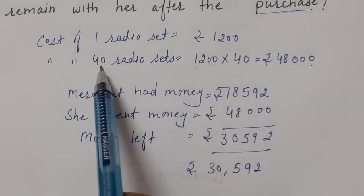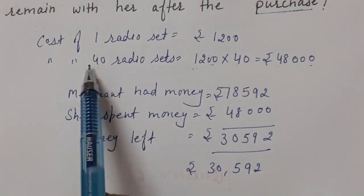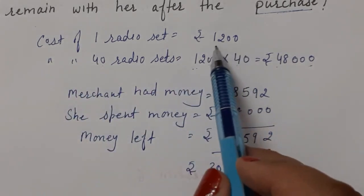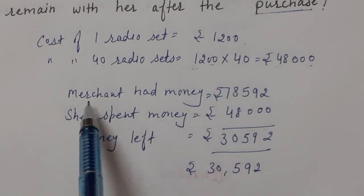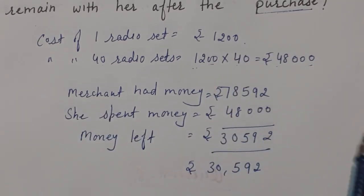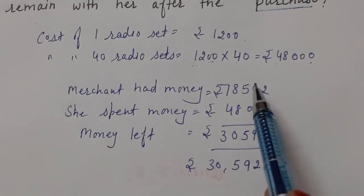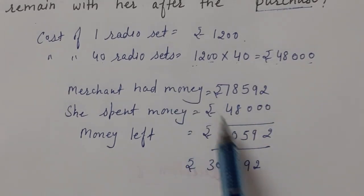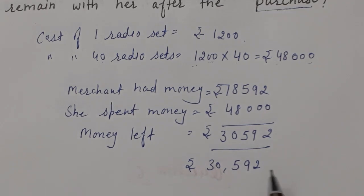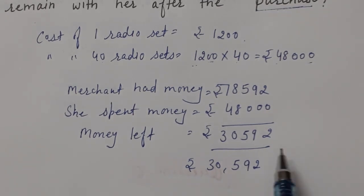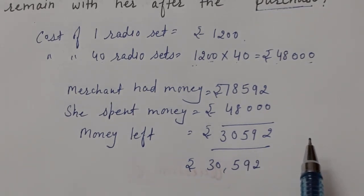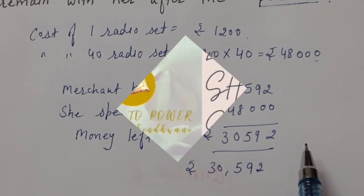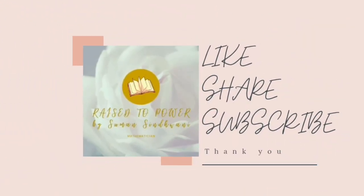Remember, you should not cram these problems. The number of radio sets could be 50 or 30, the cost per set could change, and the merchant's initial money could also vary. You need to understand each question carefully rather than memorizing. Practice all these questions on a rough note and then try solving them again on your own. Thank you.